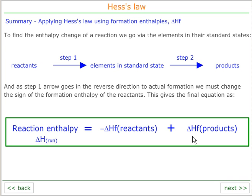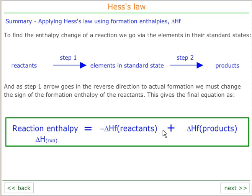This gives us a general form. Reactants to elements is the negative of the enthalpy of formation, and then the positive enthalpy of formation of the products. So reaction enthalpy equals negative enthalpy of formation of reactants plus enthalpy of formation of products.